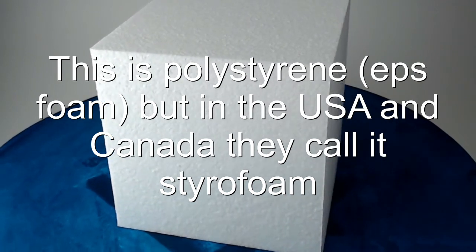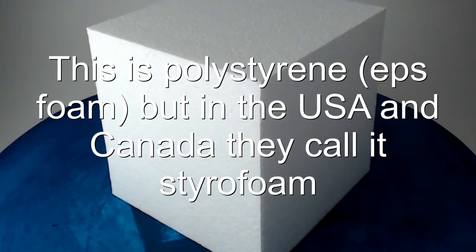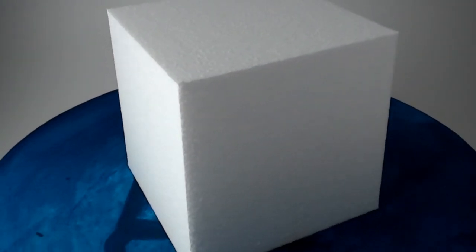EPS foam, also known as expanded polystyrene which is white in colour, is often used in food containers, coffee cups, and as cushioning material in packaging.